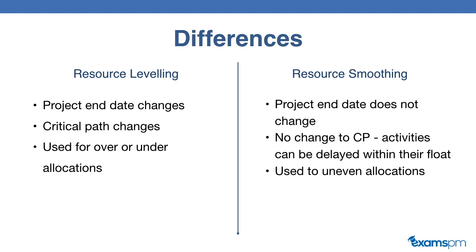In comparison, in resource smoothing, the end date of the activities doesn't change. Given the dates that you have, you're just readjusting the schedule a little bit so that the amount of work the resource has to do week by week is roughly the same. There's no change to the critical path, and activities can be delayed based on how much float you have in that specific activity. It is usually used to even out uneven allocations. So the major difference is: resource leveling changes the end date, while resource smoothing does not change the end date — you're just adjusting uneven allocations.